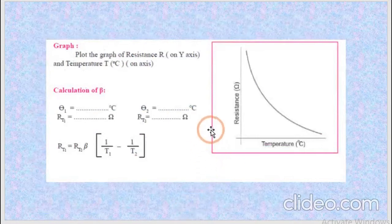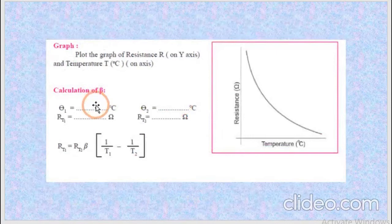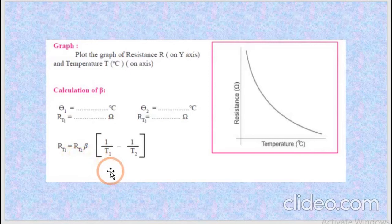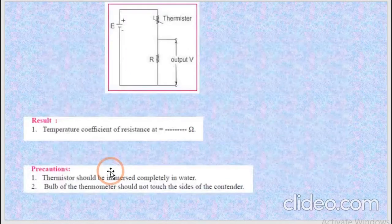We have to plot the graph of temperature versus resistance. And after that, we have to do calculations of beta that RT1 equals RT2 beta into 1 upon T1 minus 1 upon T2.